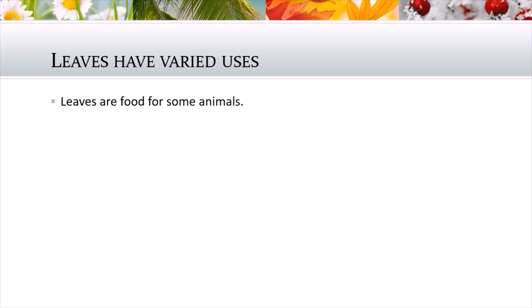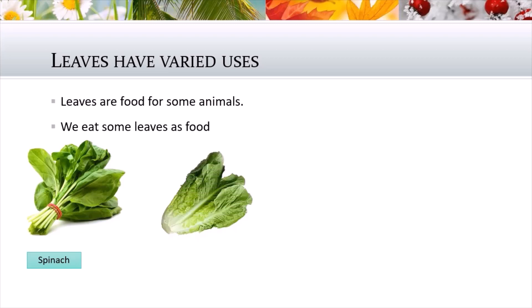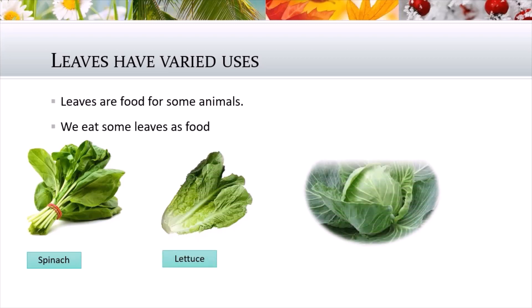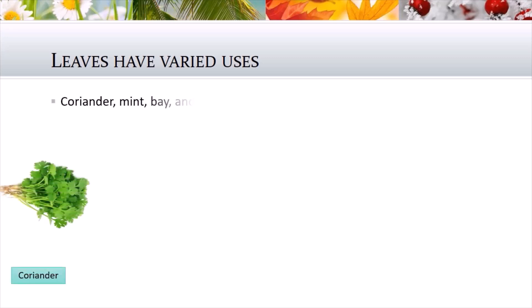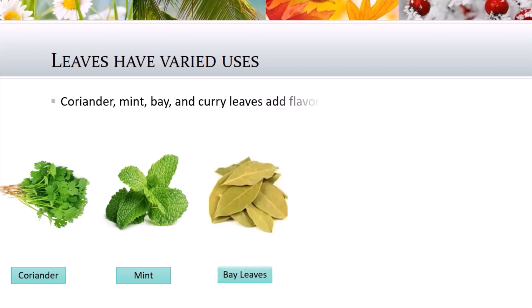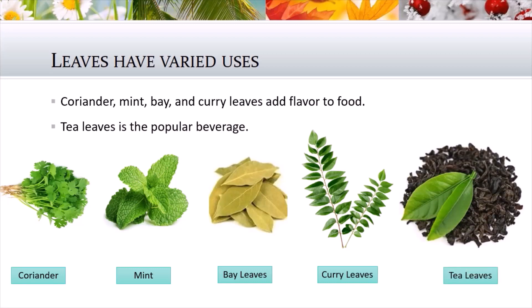Leaves have varied uses. Leaves are food for some animals such as cow, goat, and sheep. We eat some leaves as food as well. Some leaves like coriander, mint, bay, and curry leaves add flavor to food and give a very good smell.